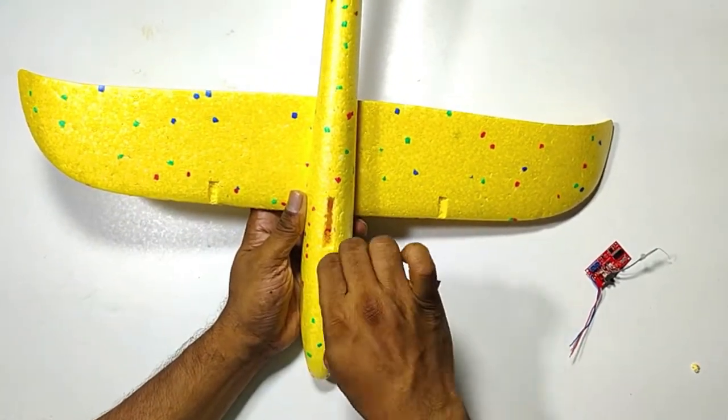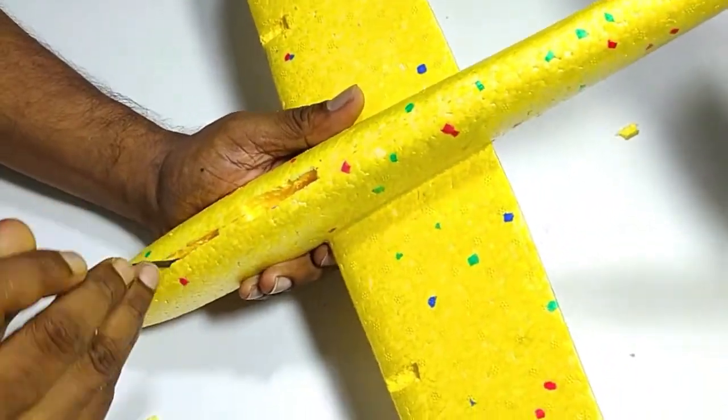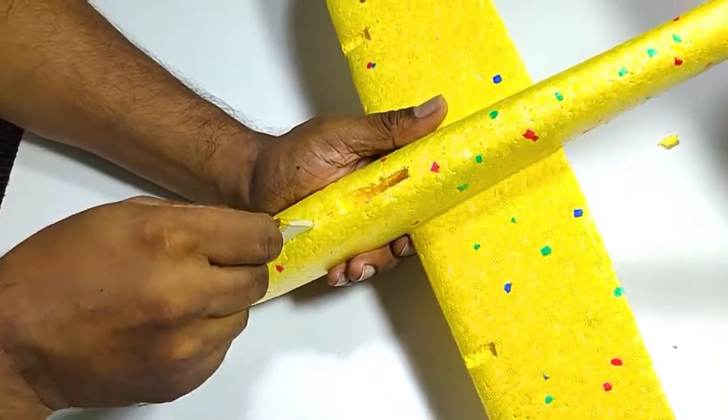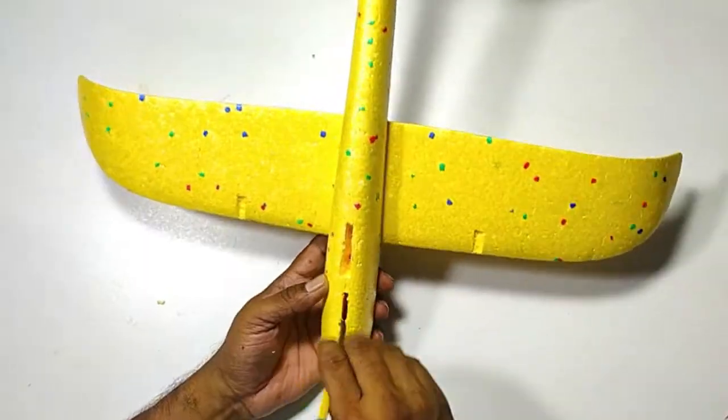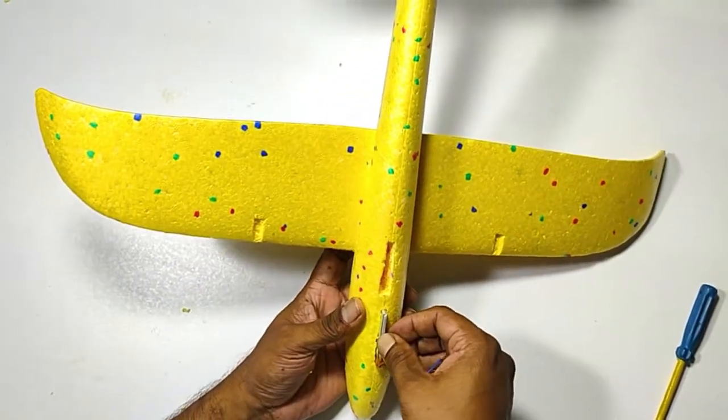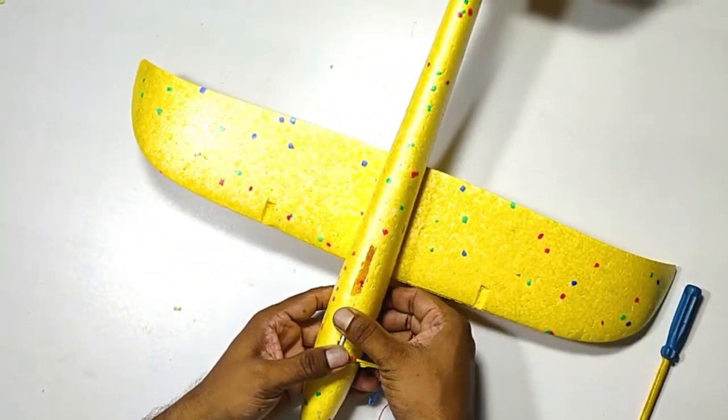So for removing that unwanted material, I am going to use a screwdriver. So it's very easy. Now battery got fitted. It's very tight. It's got fitted.